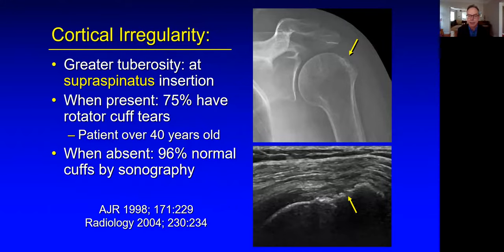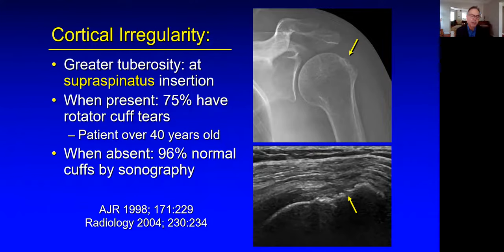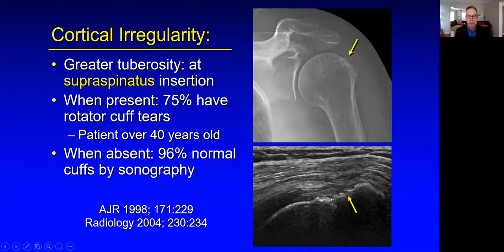A side point about cortical irregularity — this is a very important point. Even looking at a radiograph, if you see cortical irregularity at the greater tuberosity surface at the supraspinatus footprint, three out of four patients are going to have a rotator cuff tear. If that bone is smooth, 96% of those tendons will be normal. So when I look at a radiograph, I will often suggest ultrasound or MRI to evaluate the cuff given this finding. Back to ultrasound, we will look for that cortical irregularity as an indirect sign. If you see cortical irregularity at the supraspinatus footprint, if there's a tear — which there likely will be — it will be at that site.